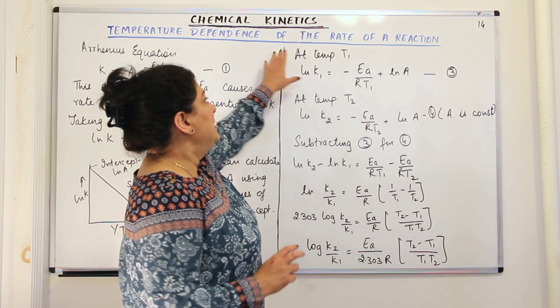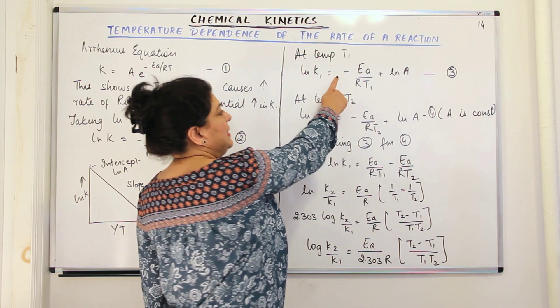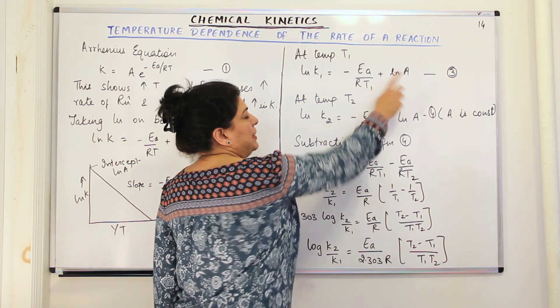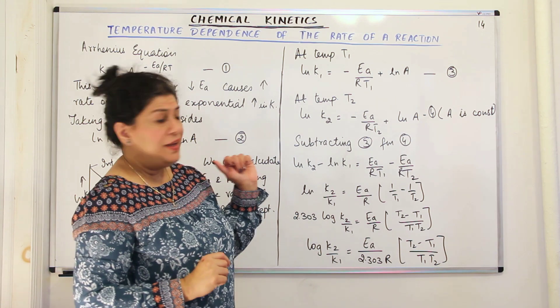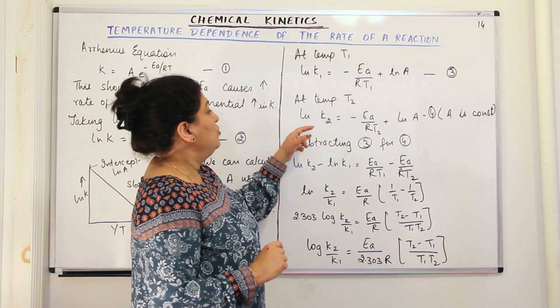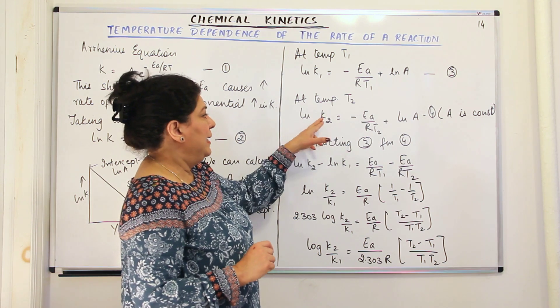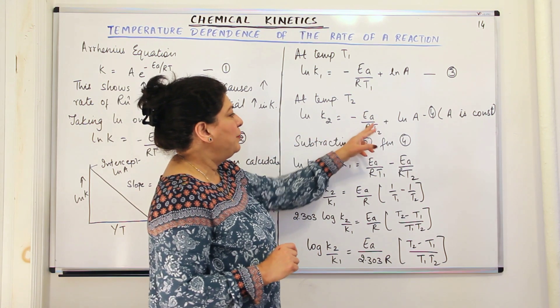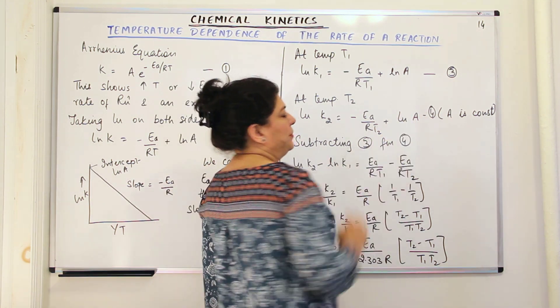So at temperature T1, this equation becomes ln K1 is equal to minus Ea upon RT1 plus ln A which remains as such. Let us call this equation 3. And at temperature T2, ln K2 would be equal to minus Ea upon RT2 plus ln A again remains the same.